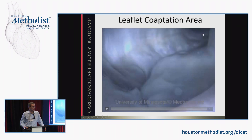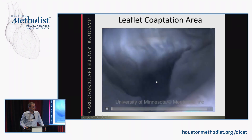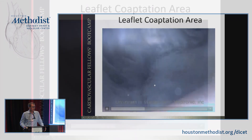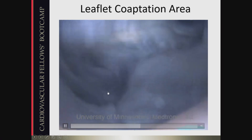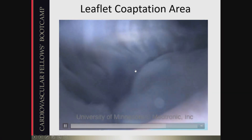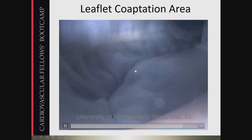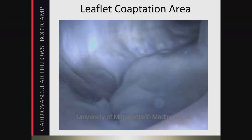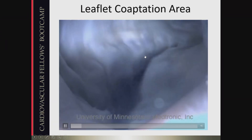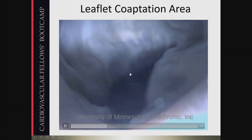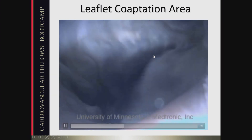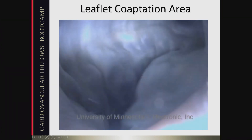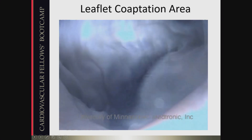This video from the University of Minnesota Medtronic labs uses a de-blooded heart reanimated with saline. The key point is the coaptation zone — it's an entire zone, not a point or a line. It's several millimeters of coaptation between the anterior and posterior leaflets, and that overlap is required for competence. The two leaflets don't just touch; they really have to overlap and create that tissue plane.